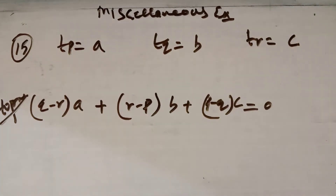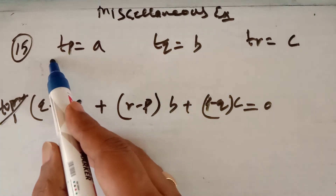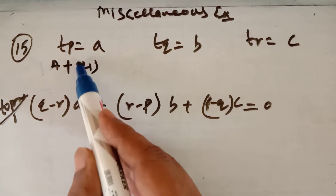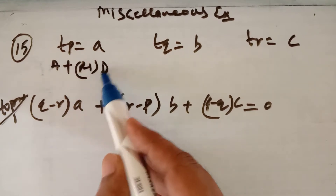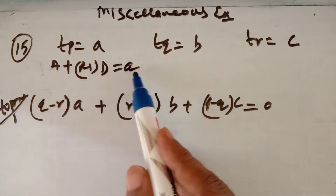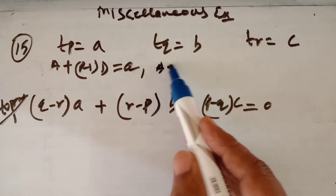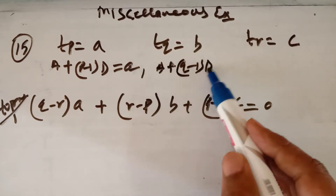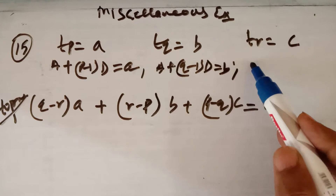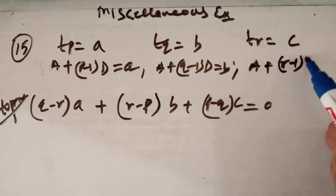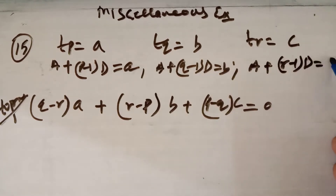Let the first term of the AP be capital A and common difference be capital D. So the pth term will be A + (p−1)·D = a, the qth term will be A + (q−1)·D = b, and the rth term will be A + (r−1)·D = c.